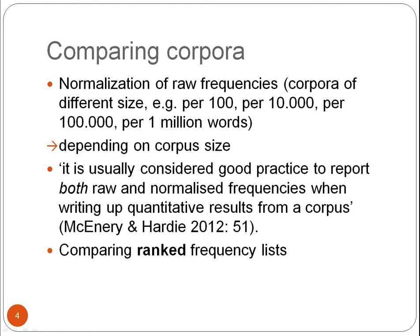So one way of comparing corpora is normalisation. Whether or not we normalise per 100 words, 10,000 words, per 100,000 words, per a million words — whatever — depends on the corpus size. So if my corpus is 50,000 words, I would normalise per 10,000 words. If my corpus is 500,000 words, I would normalise per 100,000 words. If my corpus is 5,000,000 words, I would normalise per 1,000,000 words. In any case, it is usually considered good practice to report both raw and normalised frequencies when writing up quantitative results from a corpus, as McEnery and Hardy have pointed out.